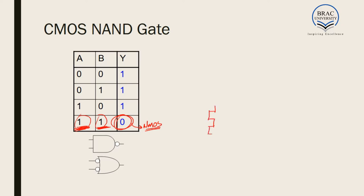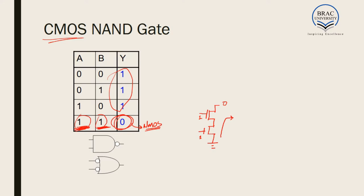If the NMOSes are in series with ground connected, when both NMOS are on — that is, both inputs are one — we get output zero. In any other case, the output will not be zero. A very easy way of designing CMOS is that we design one part — either pull-up or pull-down network — and the other network will be just the complement of this. So if the pull-down network has two MOSFETs in series, the pull-up network will have two MOSFETs in parallel.